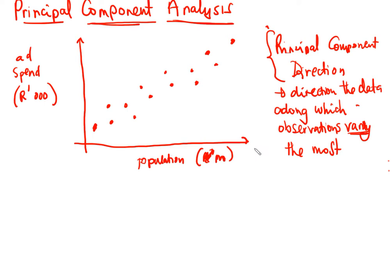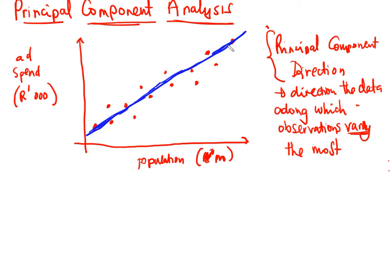When you look at this graph, you can already tell which direction the observations vary the most, and I'm going to draw it now. This is the direction — you can already see that this is where the observations vary the most. There's no other direction they vary more. If you draw a line perpendicular to the trend in the data, observations are not going to vary the most in that direction. This direction is where they vary the most, and we call that the principal component direction.